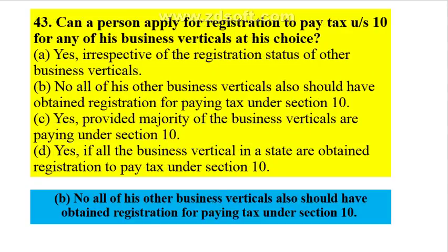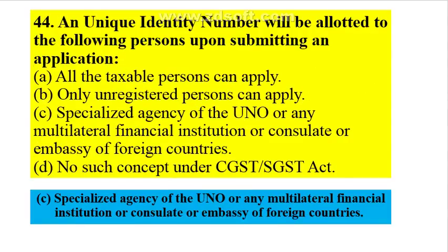Can a person apply for registration to pay tax under section 10 for any one of his business verticals at his choice? No — all of his other business verticals must also have obtained registration for paying tax under section 10.